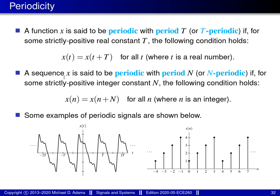Similarly, we can have periodic sequences. A sequence x is said to be periodic with period capital N, or simply N-periodic, if for some strictly positive integer N, evaluating the sequence at n or at n plus N gives the same result for every integer n. Every N units along the horizontal axis, the value of the sequence repeats. In the bottom right of this slide, there's an example of a periodic sequence with period 4, so every 4 units along the horizontal axis the sequence cycles through the same values.